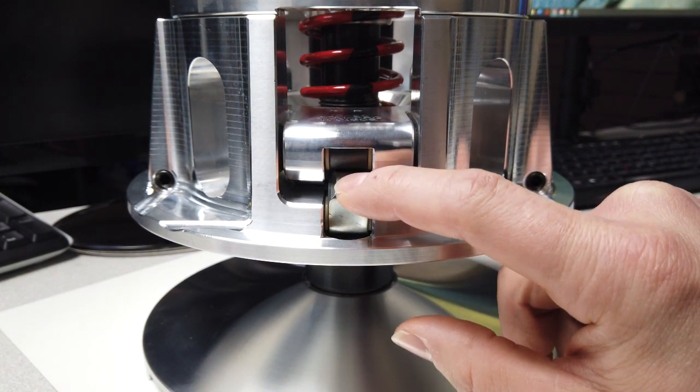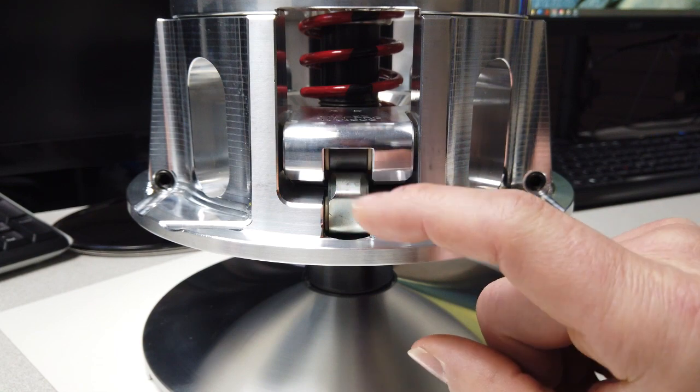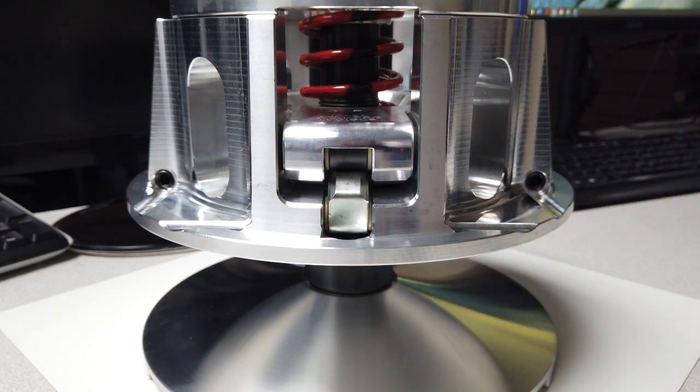The adjustment screws sit underneath the cam arm and they control how high the cam arm sits versus how low it sits, which is called tuck.